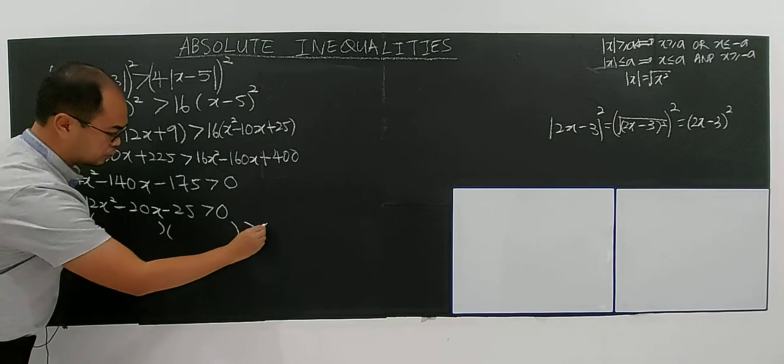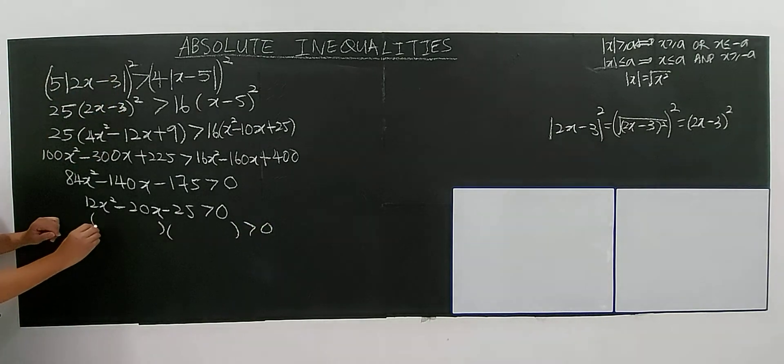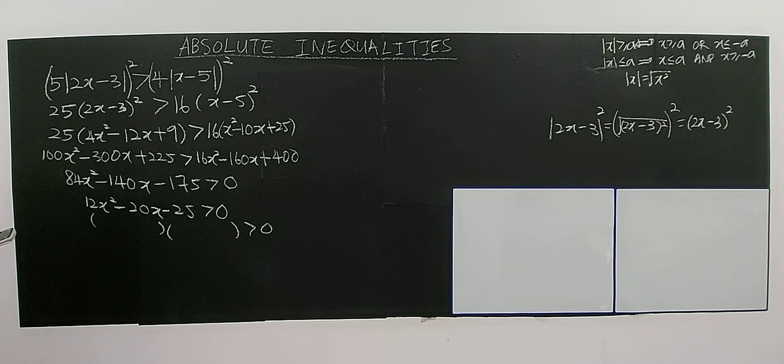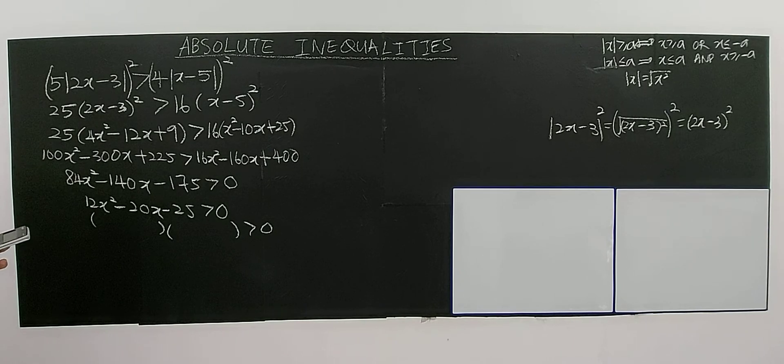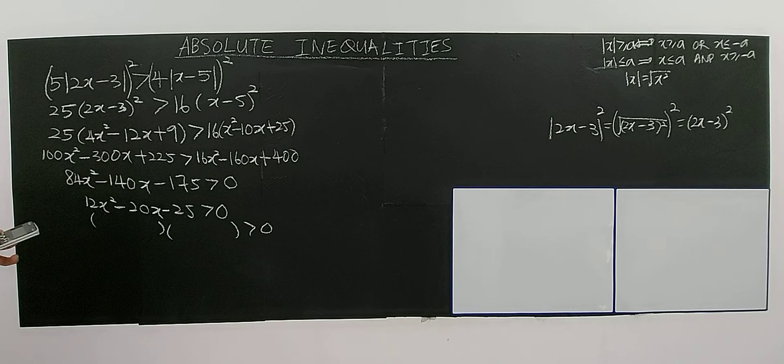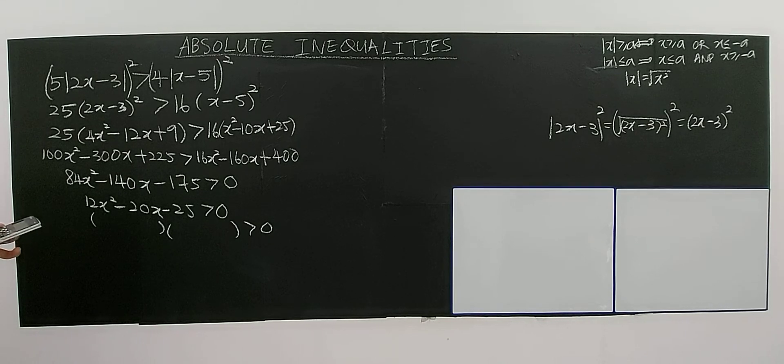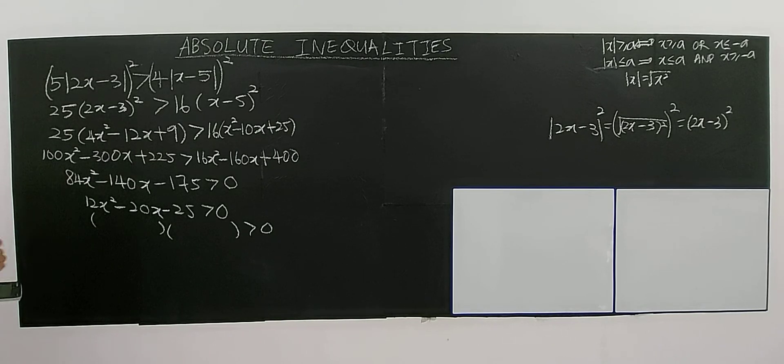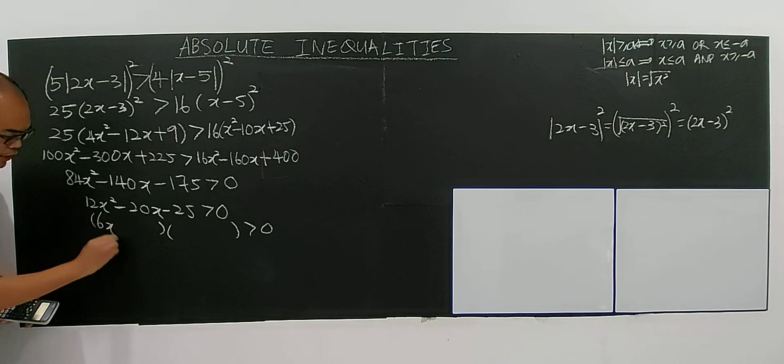Then you have 12x squared. The number is too big, it's better for you to use calculator to help you calculate. So you have a polynomial, you select 2, and 12, negative 20, negative 25. You get 5 over 2 and 5 over 6, so that means you have 6 and 2.